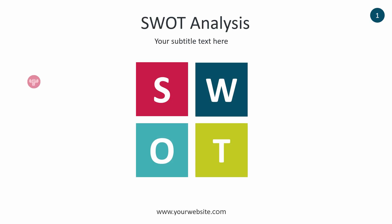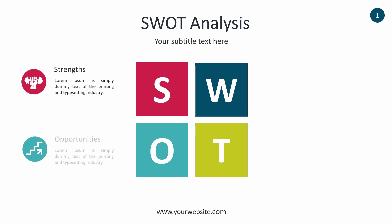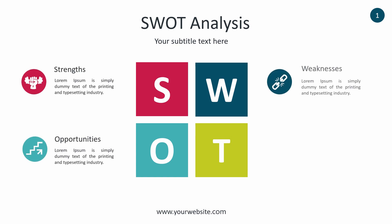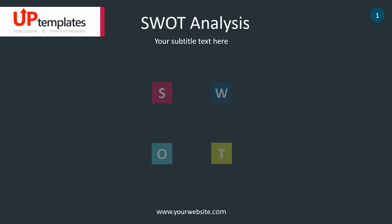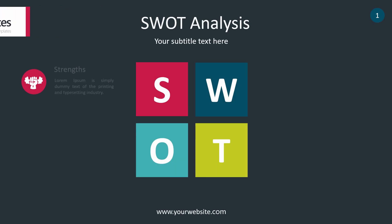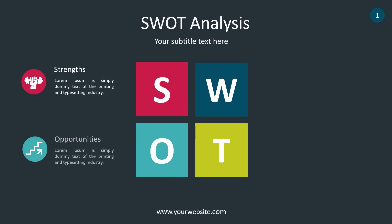On the slide, you will see a square divided into four segments. The red segment with the letter S stands for strength, the dark blue with the letter W stands for weaknesses, the light blue with the letter O stands for opportunities, and the yellow with the letter T stands for threats.